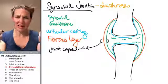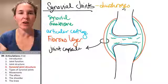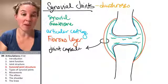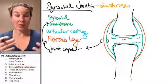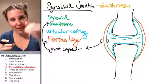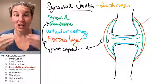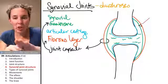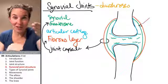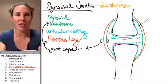Together, the fibrous layer and the synovial membrane form the joint capsule — a capsule surrounding and forming a little space around our two bones. If we could look at a joint capsule, the outside surface would be the fibrous layer. If you opened up the joint capsule and stuck a pin on the inside surface, you would be touching the synovial membrane.